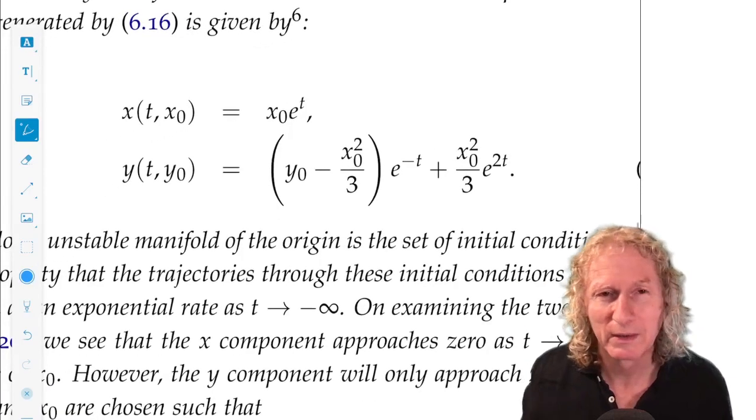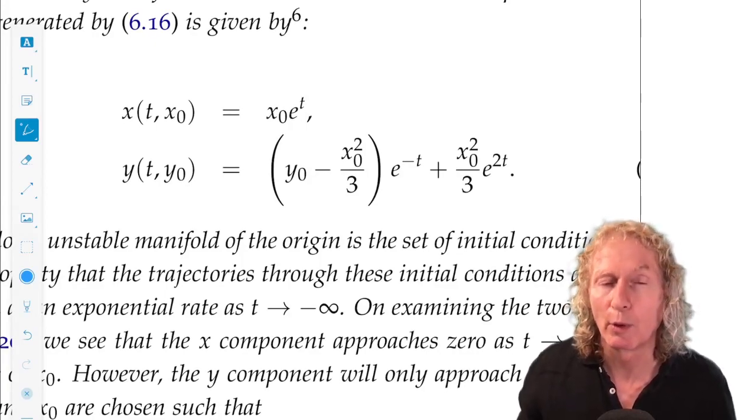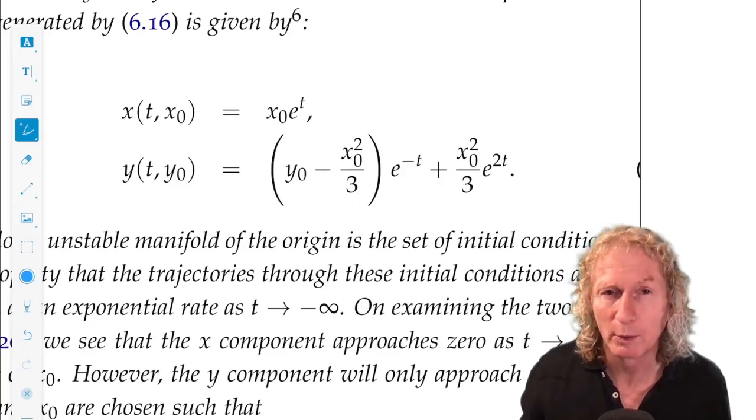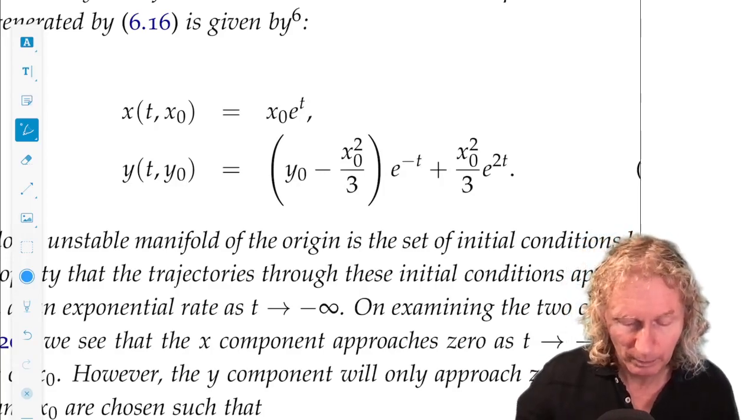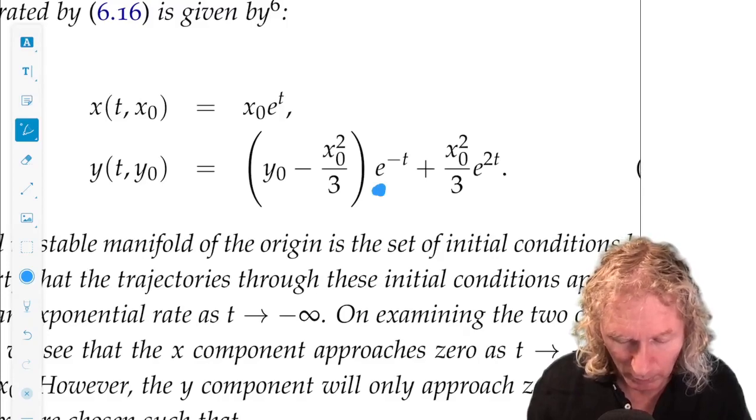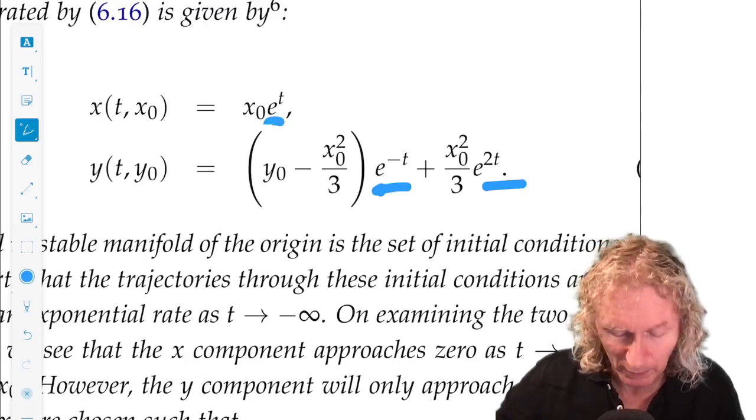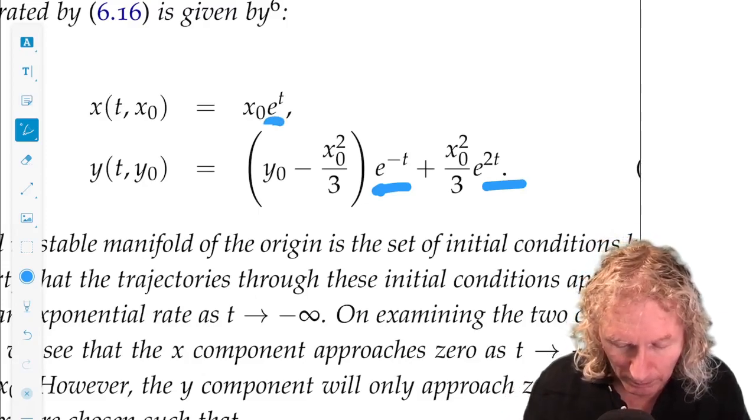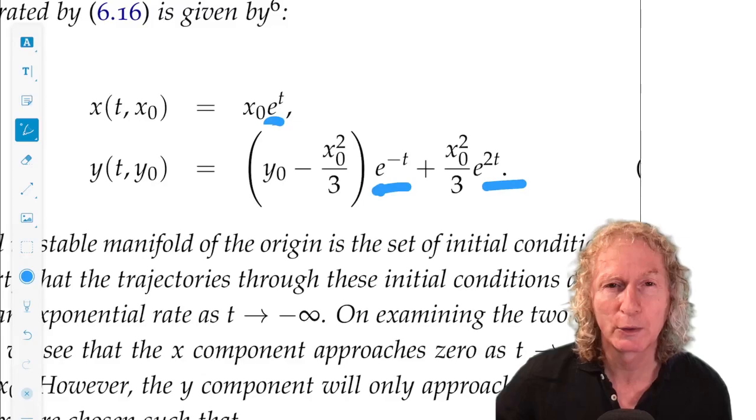Now, what is the stable manifold? That's the set of initial conditions corresponding to trajectories that approach zero, the equilibrium point, at an exponential rate. Okay. So, I've arranged the terms of initial conditions so that they're multiplying these time-dependent terms, which are all exponentials in this case.